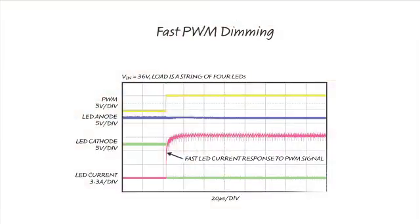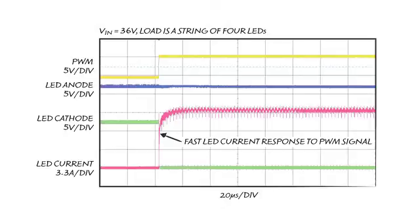Here is the fast PWM dimming performance. The red line is the LED current in responding to the yellow PWM signal. The time scale is 20 microseconds per division.